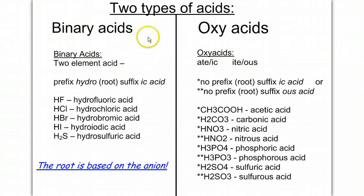Binary acids, by definition, is a two-element acid, meaning it will contain a hydrogen and then one other element. And you'll notice after this section, all acids start with a hydrogen. So to name a binary acid, we're going to give it a prefix of hydro. So notice each of the following names starts with hydro.